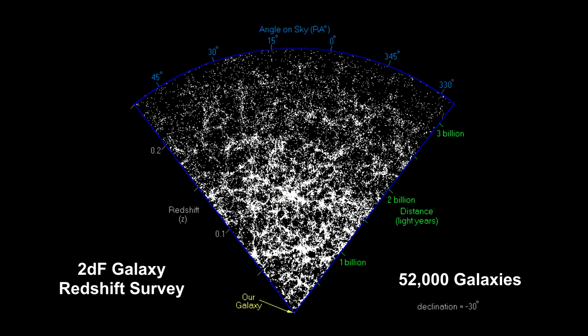By collecting distances to thousands of galaxies in a narrow strip of the sky, it is possible to produce a slice of the universe, like this one from the 2DF Galaxy Redshift Survey. In 2003, this survey looked out into the universe to 3.5 billion light-years.